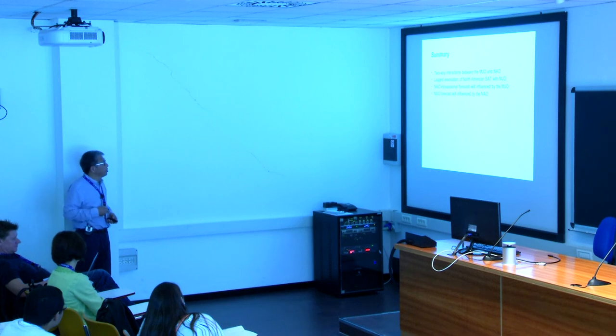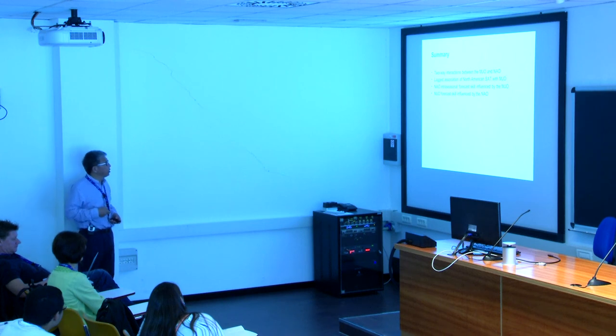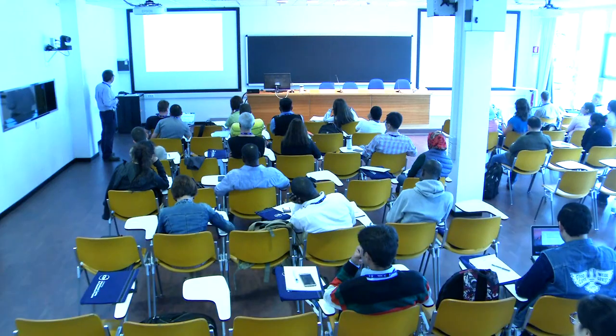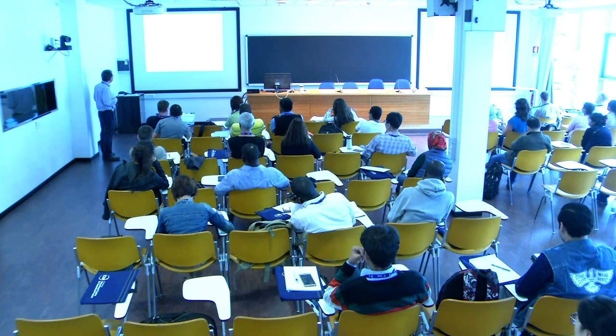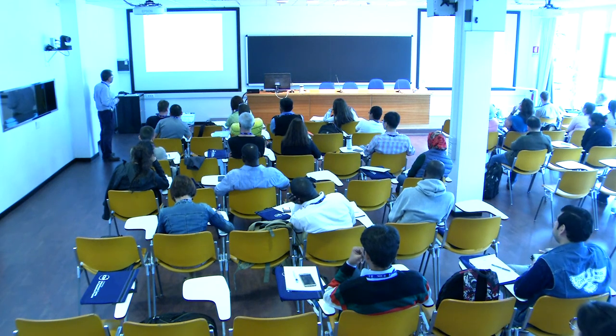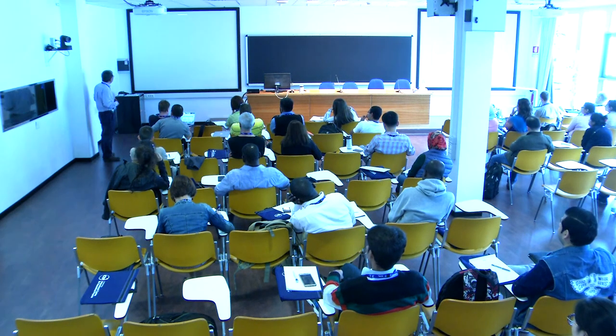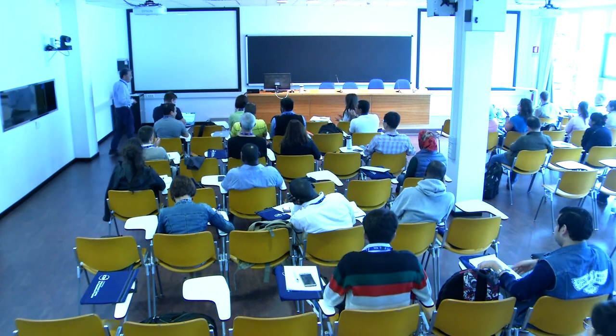In summary, we see two-way interactions between MJO and NAO with clear lag associations. Surface air temperature in North America shows a very strong signal after NAO. The MJO forecast skill is influenced by the NAO, and the NAO forecast skill is influenced by the MJO — a genuine two-way interaction. Thank you.